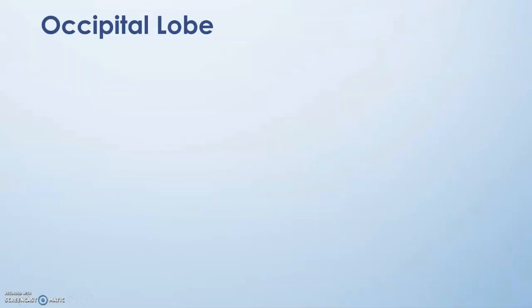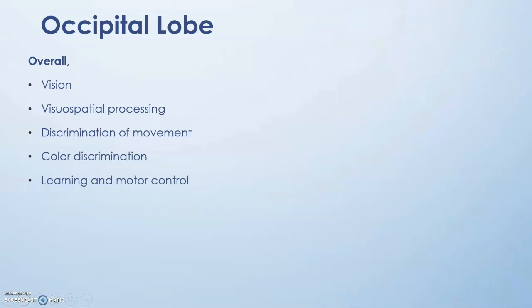Let's get started with the occipital lobe. To have an overview of what functions the occipital lobe is involved in: it is primarily majorly involved in vision, visuospatial processing, discrimination of movement, color discrimination, and it is also implicated in learning and motor control.